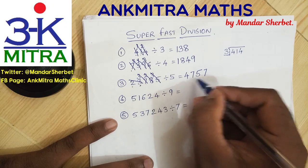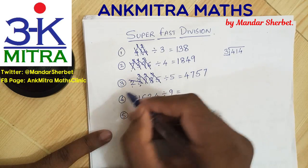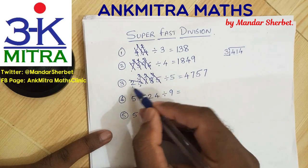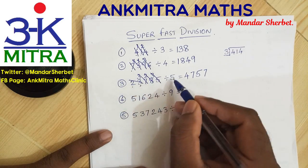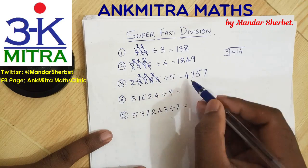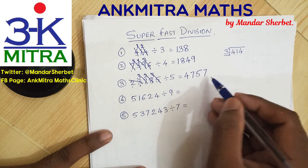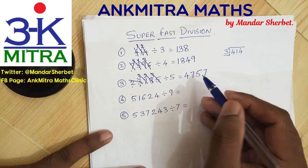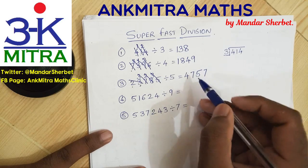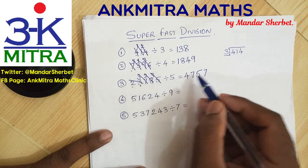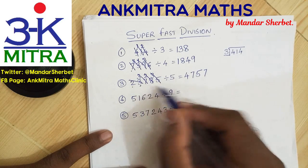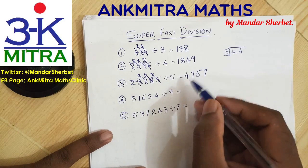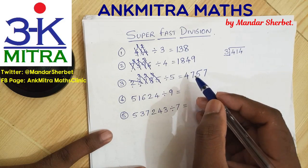The final answer is 44757. As you can see, we can do division of even a 5-digit number divided by a 1-digit number in a matter of just a few seconds. With a little bit of practice, kids can actually do these sums in less than 10 seconds very easily.